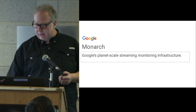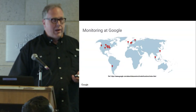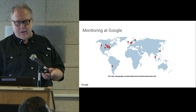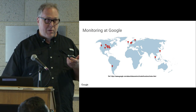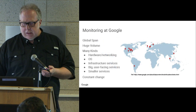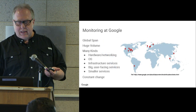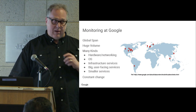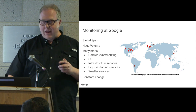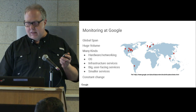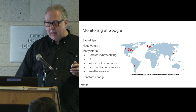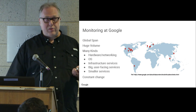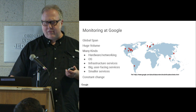I'll tell you a little bit about what that is. Monitoring at Google is a global problem. We have data centers and points of presence all over the world, full of computers that we use to run our services. Besides that global span, we have a huge volume. We monitor billions of things — every job running on every computer at Google, network hardware, operating systems, various infrastructure services. It's hundreds of billions of values being measured at any one time, and we ingest about two and a half terabytes per second.